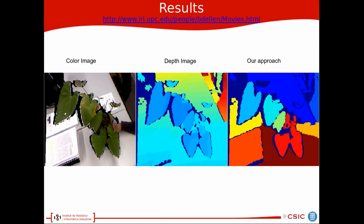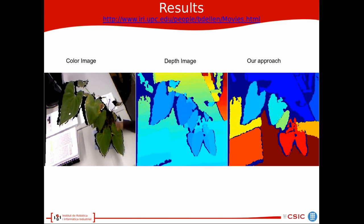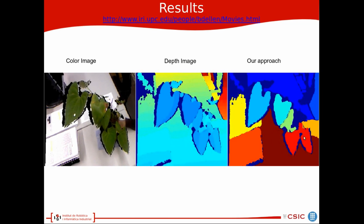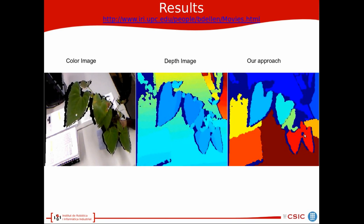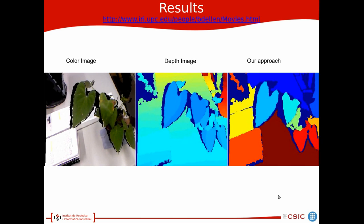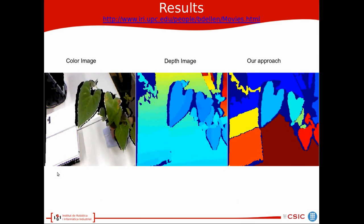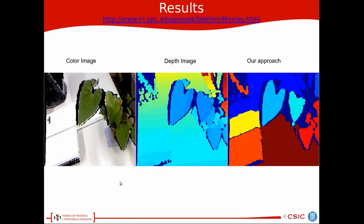This example shows tracking of multiple leaves of a plant. We can see a minor problem in this that the two leaves, these two leaves were under segmented in the beginning so they were kept the same way. We performed some translation and rotation of the plant.